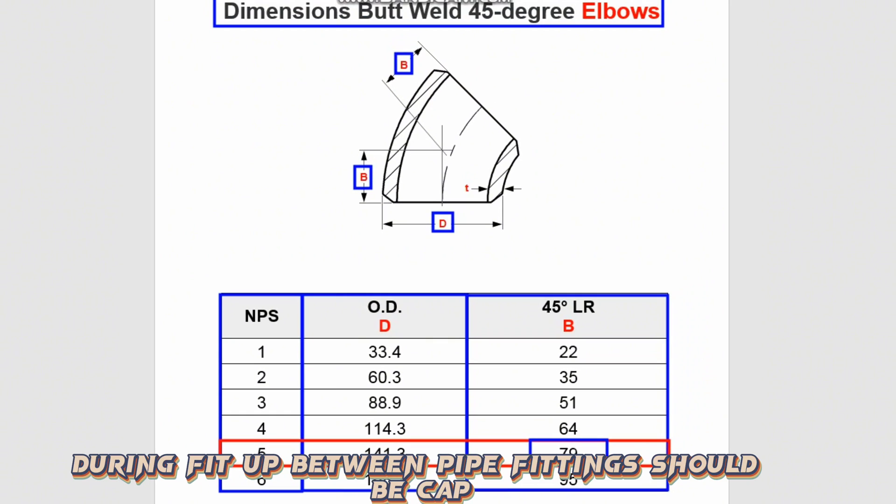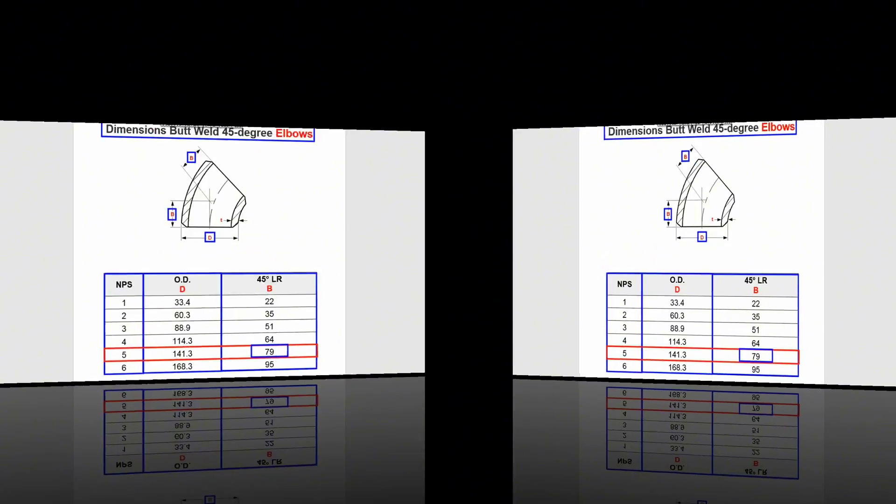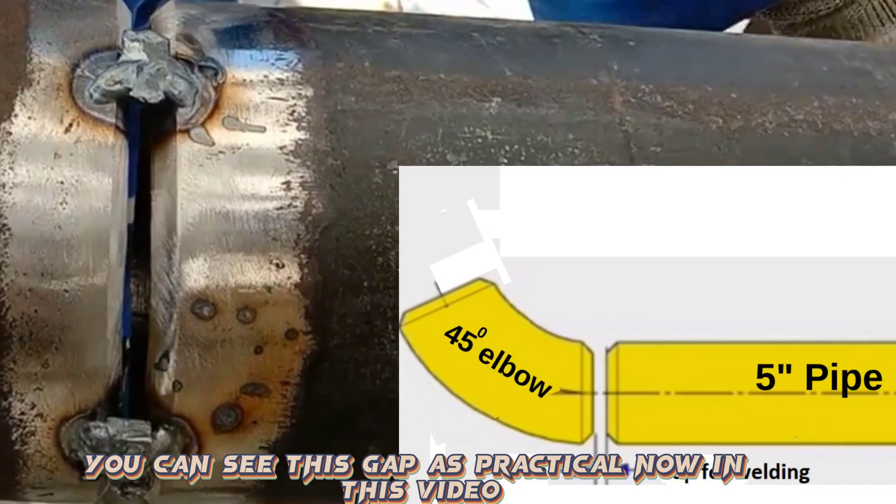During fit-up, between pipe fittings should be a gap of approximately 3 millimeters for welding. You can see this gap as practical now in this video.